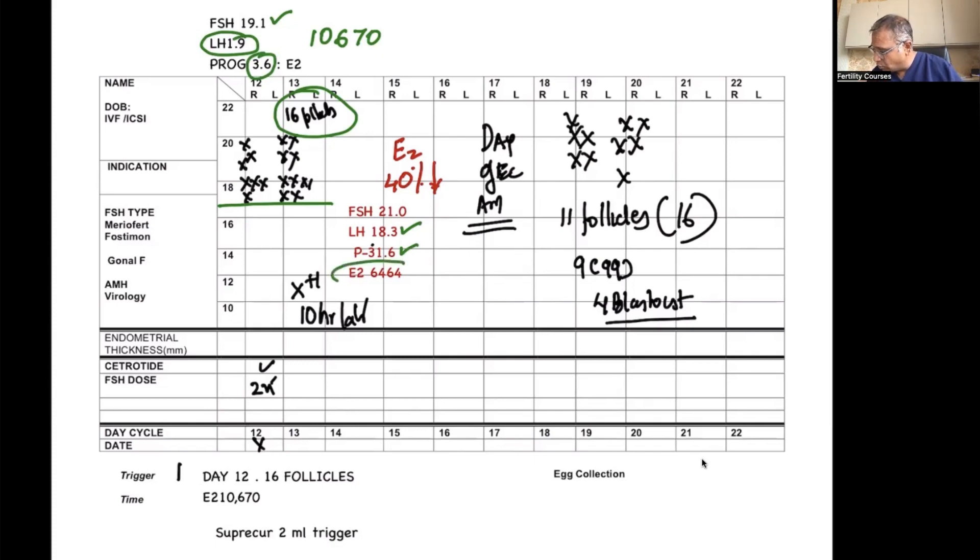But if you have a look at the E2, it dropped to 6,464. So a 40% reduction of E2 levels, and that's a bit worrying. So what I did is I said, let's do an ultrasound scan before the egg collection, and what we noticed is that 11 follicles were now present, and five follicles had gone. We proceeded with egg collection, got nine eggs, and have currently four blastocysts in the freezer.